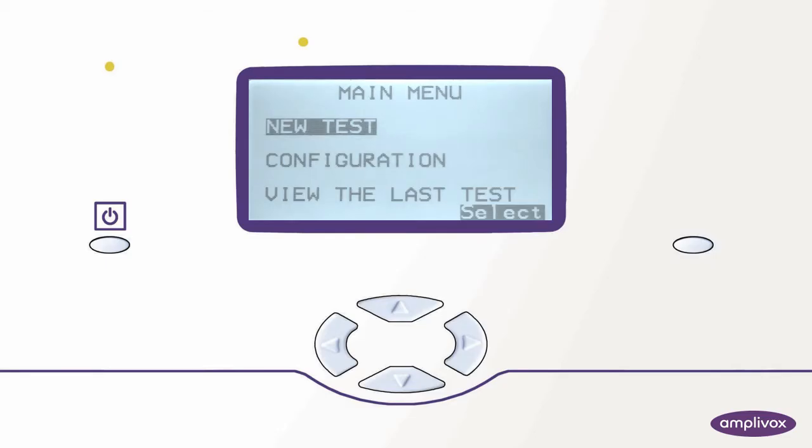Thank you for joining this fast learner video. This video will give you an overview of how to activate ipsilateral reflexes in your 302 admittance meter.